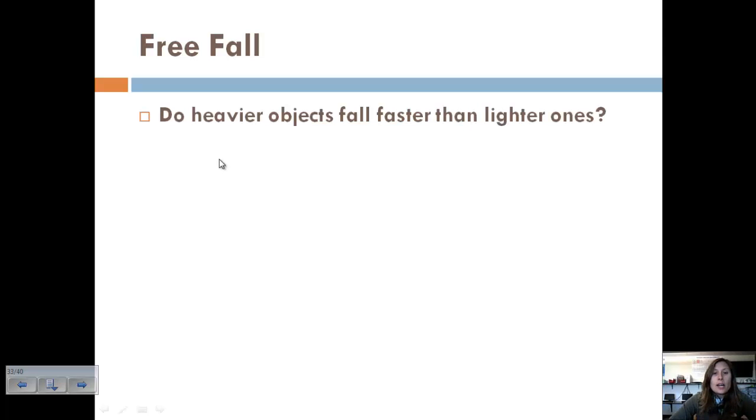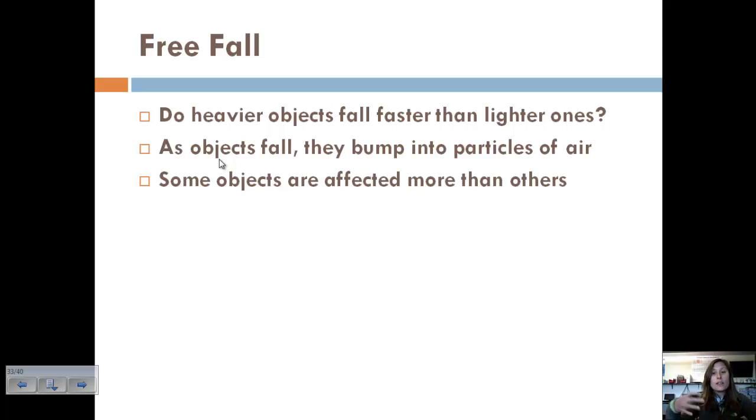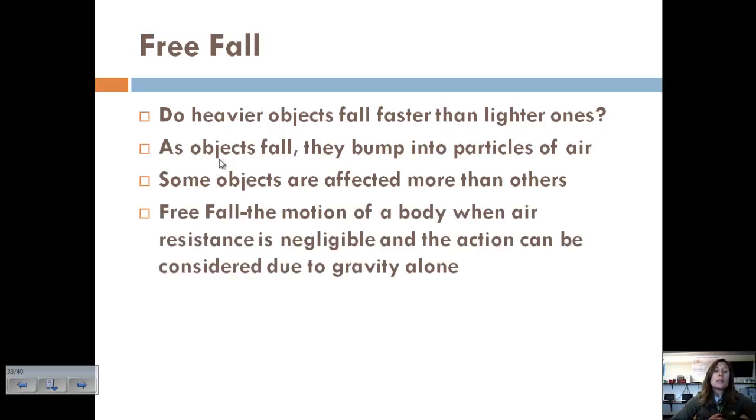So the question is, do heavier objects fall faster than lighter ones? Well, as objects fall, they bump into particles of air. And so some objects are affected more than others based on their shape and things like that.